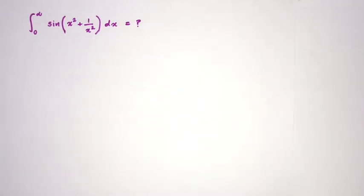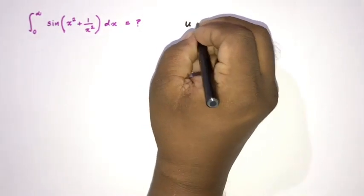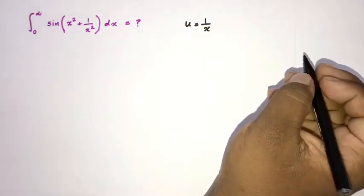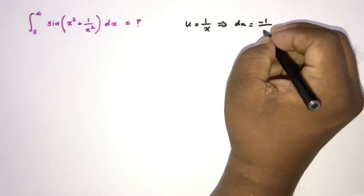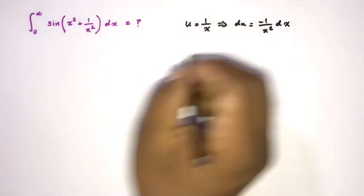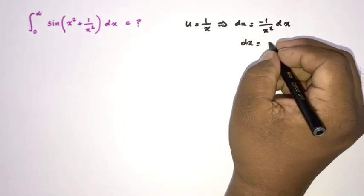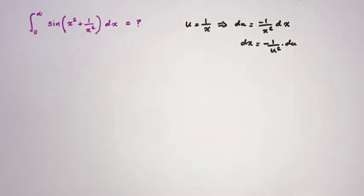Since we have 1 over x squared, we take the substitution u = 1/x. Differentiating, we get du = −1/x² dx, so dx = −x² du = −(1/u²) du.